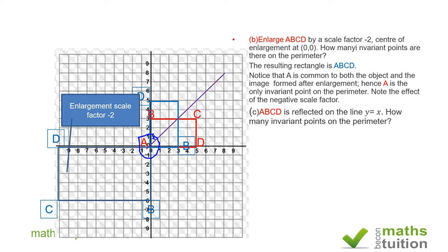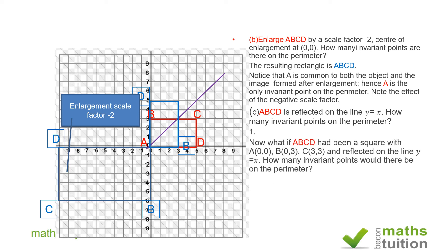Point D has moved from its original position to a new position, and point C has also moved to a new position. So only A retains its original position. In this case there is only one invariant point.